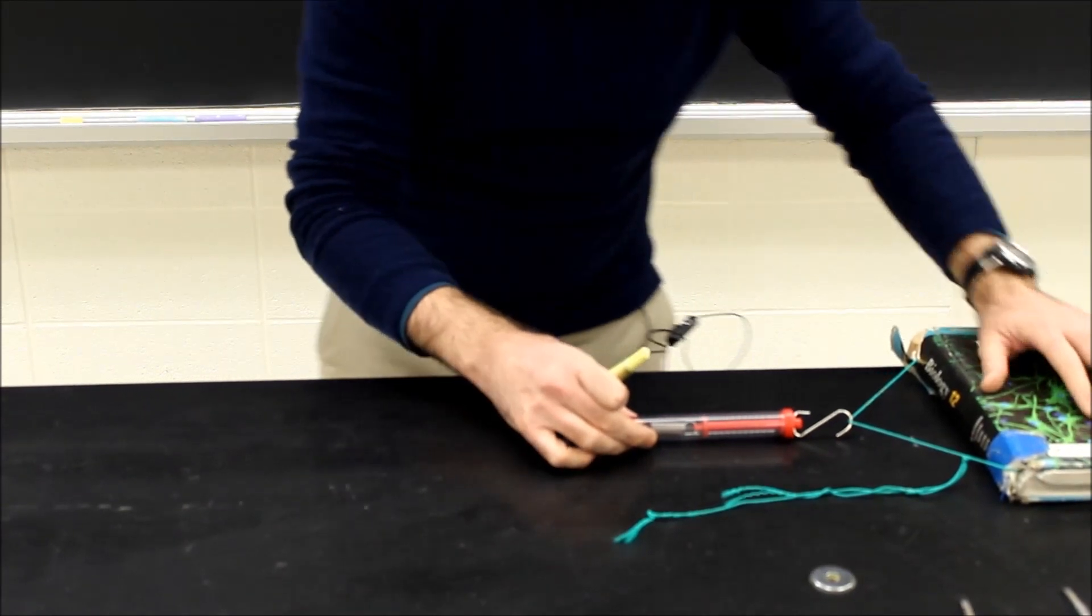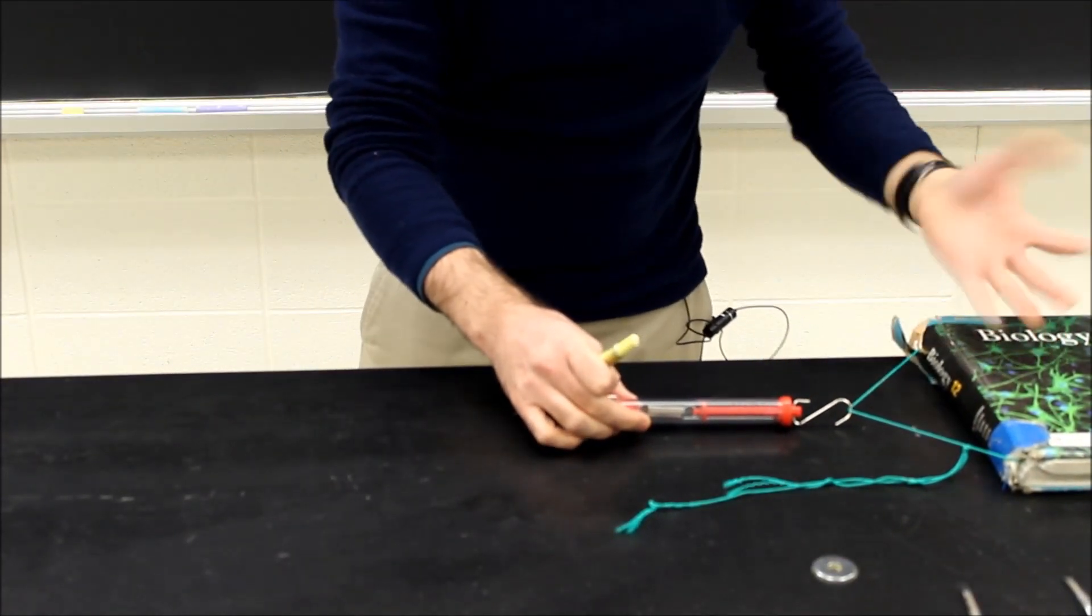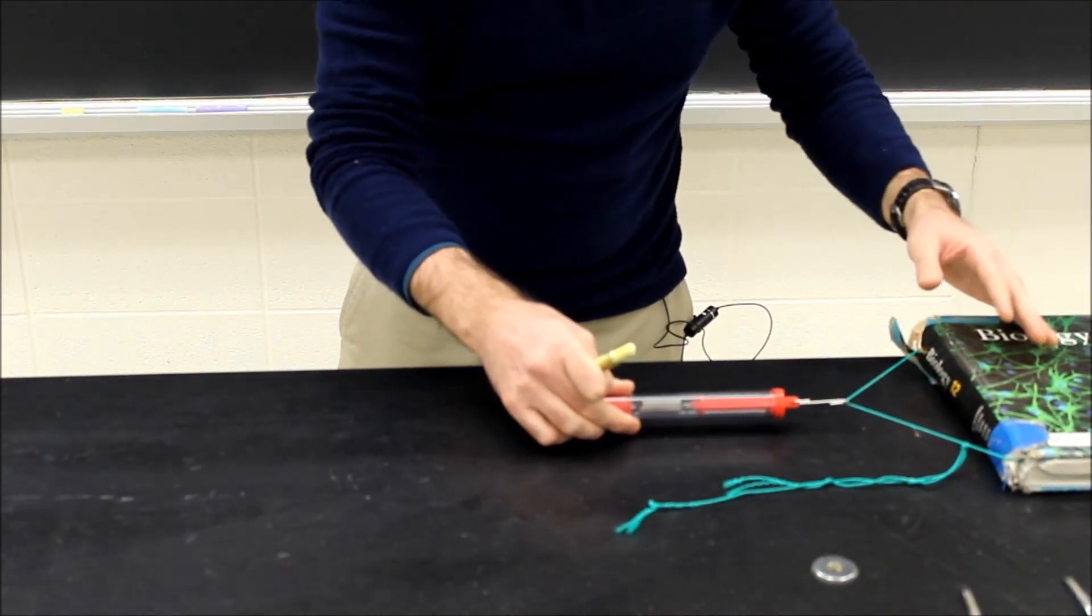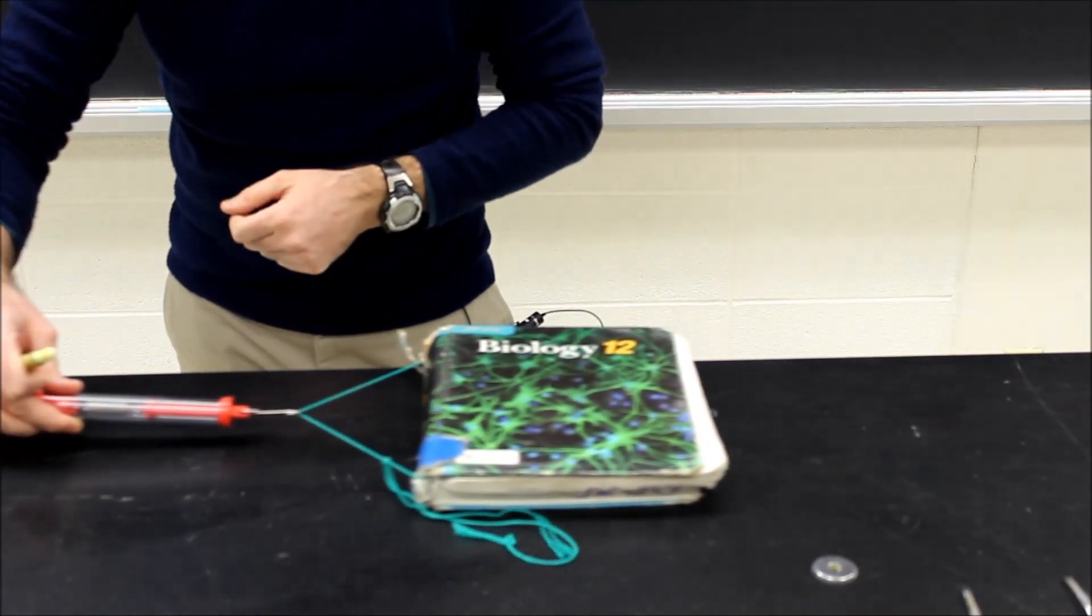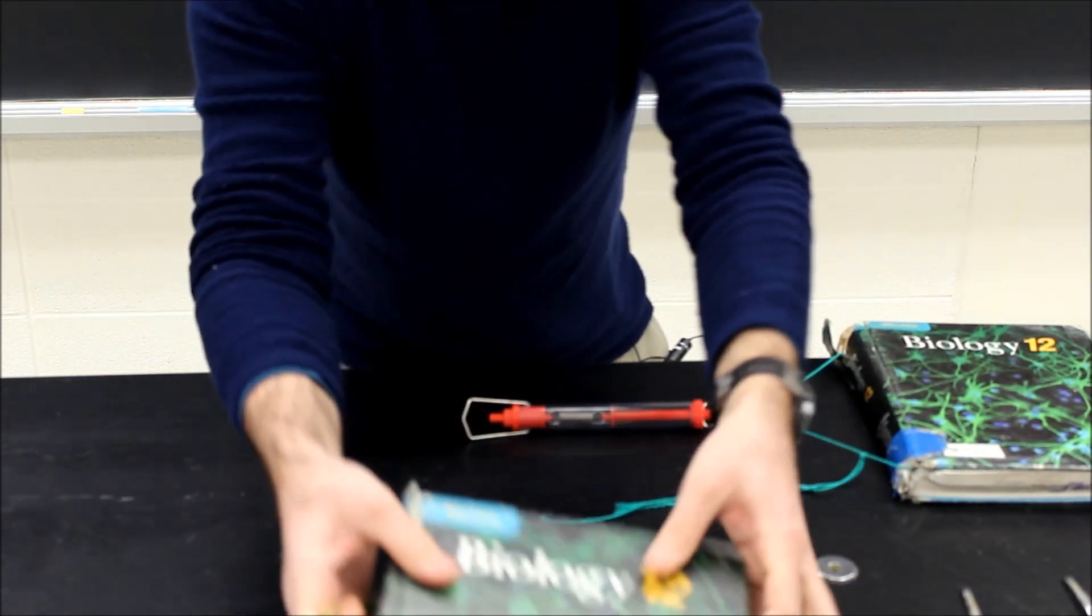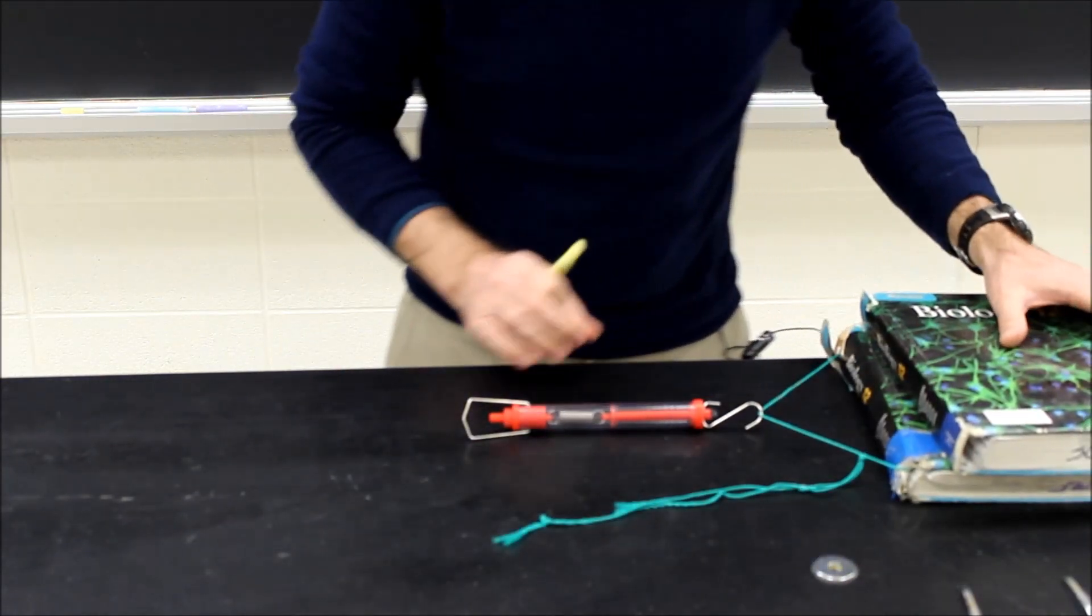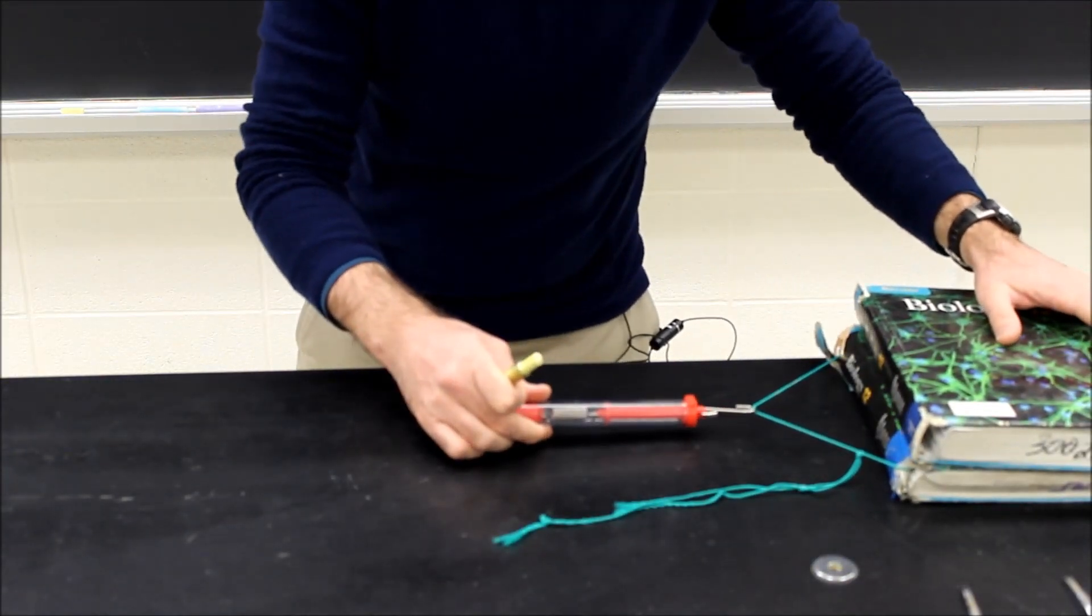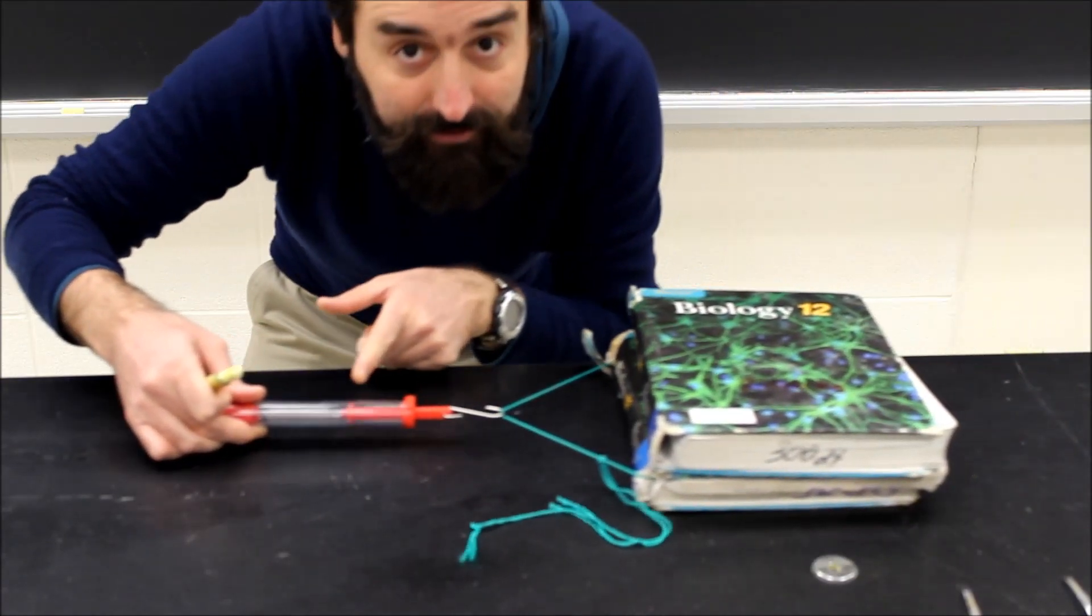Here I have some garbage book and I'm pulling it with a spring scale. And you can see that to pull it, I've got to match friction and that's about 3 Newtons of force. Now, you might think that the weight matters. If I put a second garbage book on it, I'm not going to be too surprised that the friction is about 6.